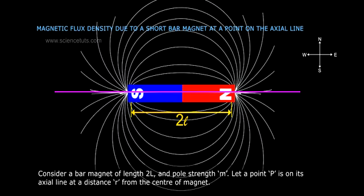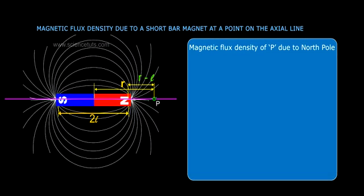Let a point P be on its axial line at a distance r from the center of the magnet. Magnetic flux density at P due to the north pole Bn is equal to μ₀/4π × m/(r-l)² along NS.